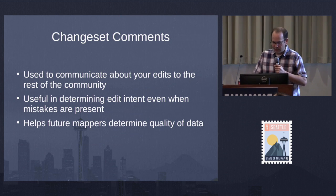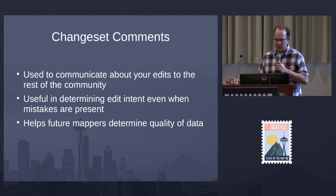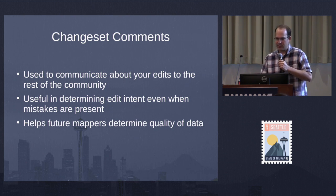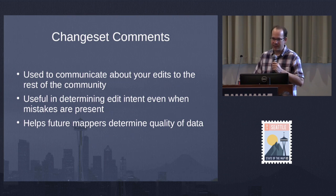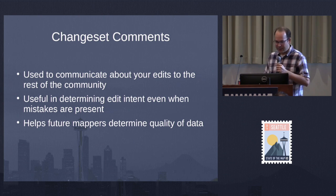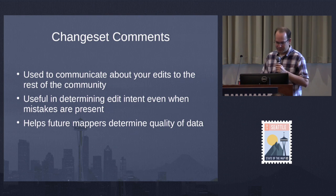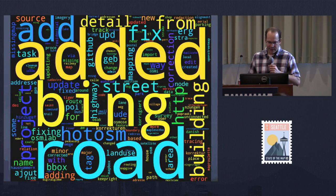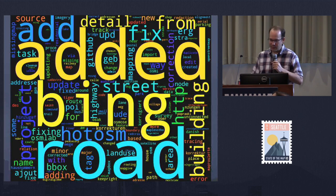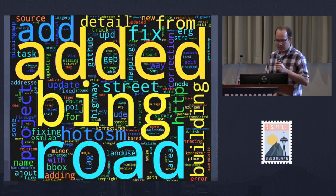Changeset comments can certainly help future mappers who look at something and think it's not quite right. I often look at the changeset in which data was created or updated. If someone comes through Kansas and says 'changing all roads in Kansas to surface=dirt because Kansas is full of farms, so that must be correct' — if I see that in a changeset comment, I'm going to revert it. But if they say 'updated roads in Kansas along my route and added surface tags,' that's probably correct. I made a word cloud out of all the changeset comments — apparently all the cool kids in OpenStreetMap add roads from Bing.